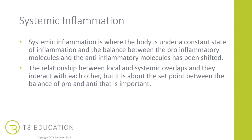Systemic inflammation is where the body is under a constant state of inflammation and the balance between pro-inflammatory molecules and anti-inflammatory molecules has been shifted, with more pro-inflammatory molecules being released. The relationship between local inflammation and systemic inflammation begins to overlap and they interact with each other. It's important that the set point between the balance of pro- and anti-inflammatory molecules is neutral. That shift can happen for many reasons and is not just related to injury, but we want to try and create that balance as much as possible.